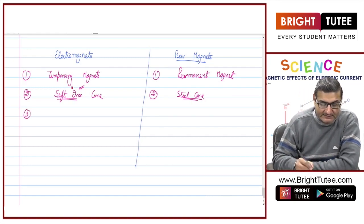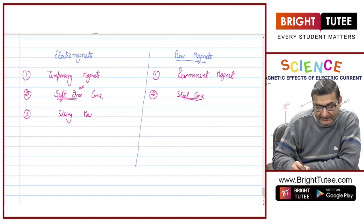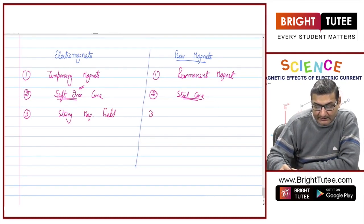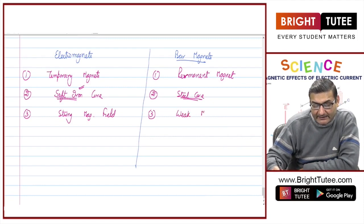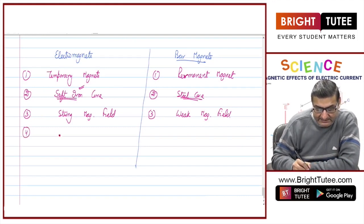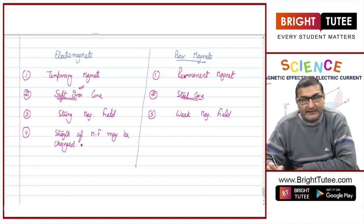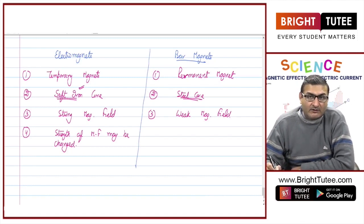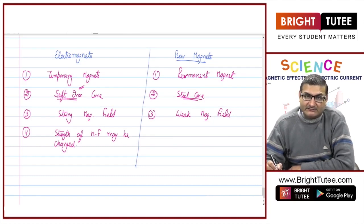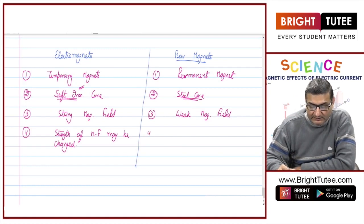The third important difference is that electromagnets create a strong magnetic field, whereas bar magnets produce a comparatively weak magnetic field. Also, in electromagnets the strength of the magnetic field may be altered — it may be increased or decreased simply by increasing or decreasing the amount of current. But this is not the case with bar magnets.